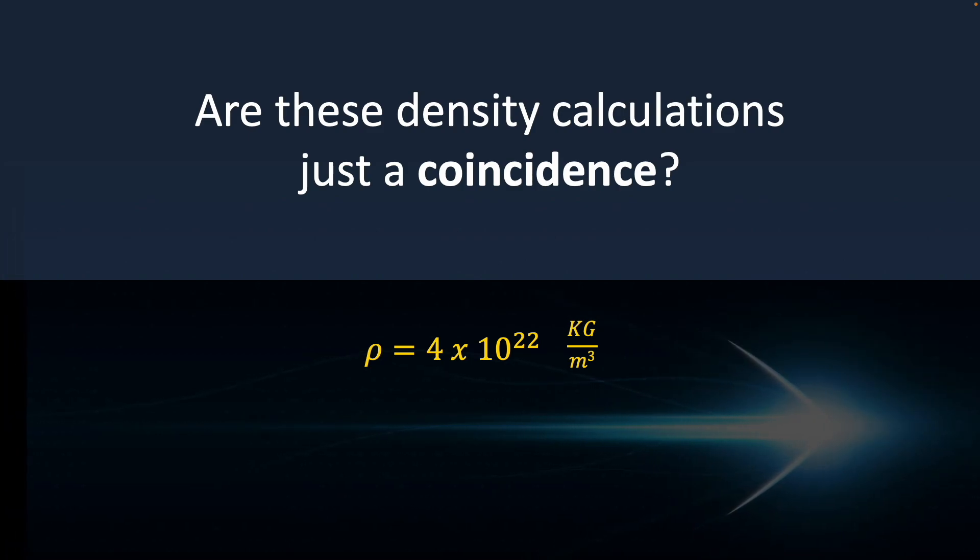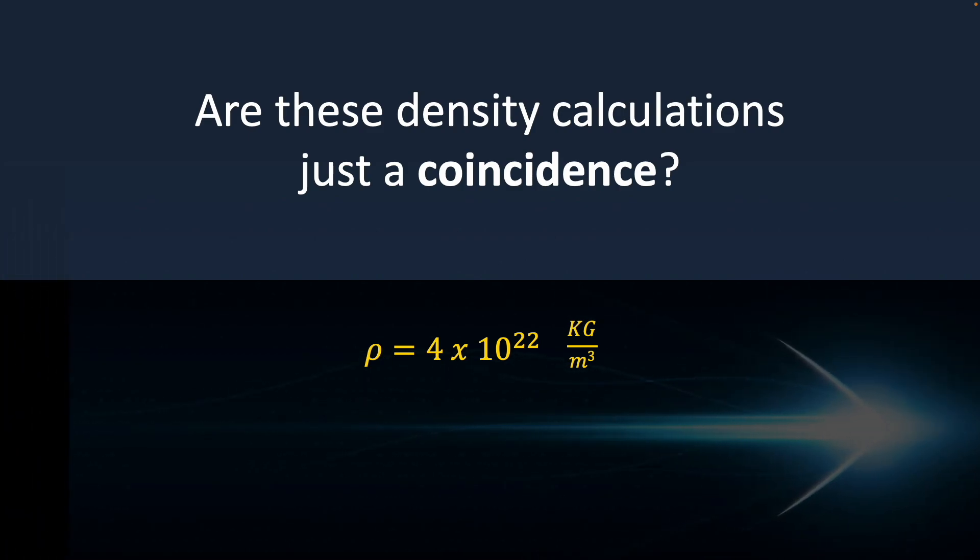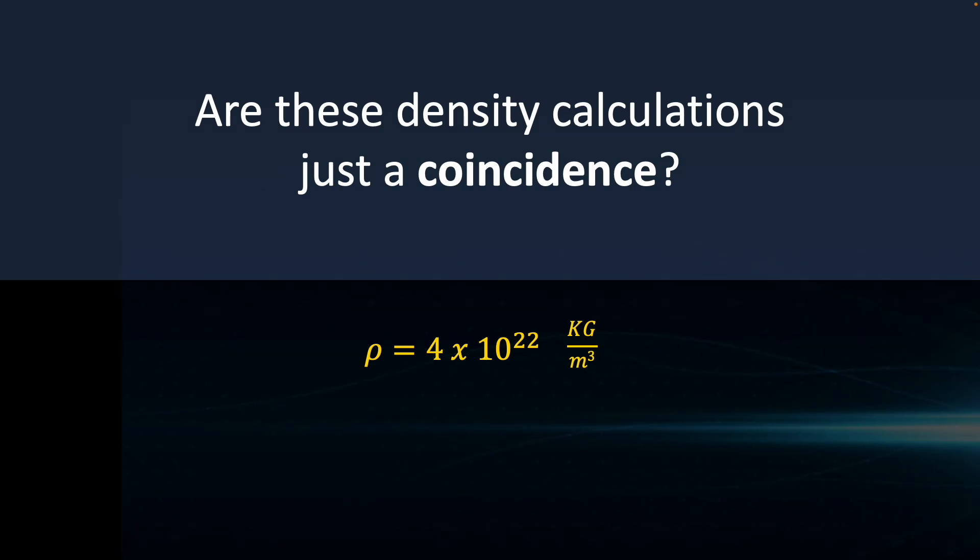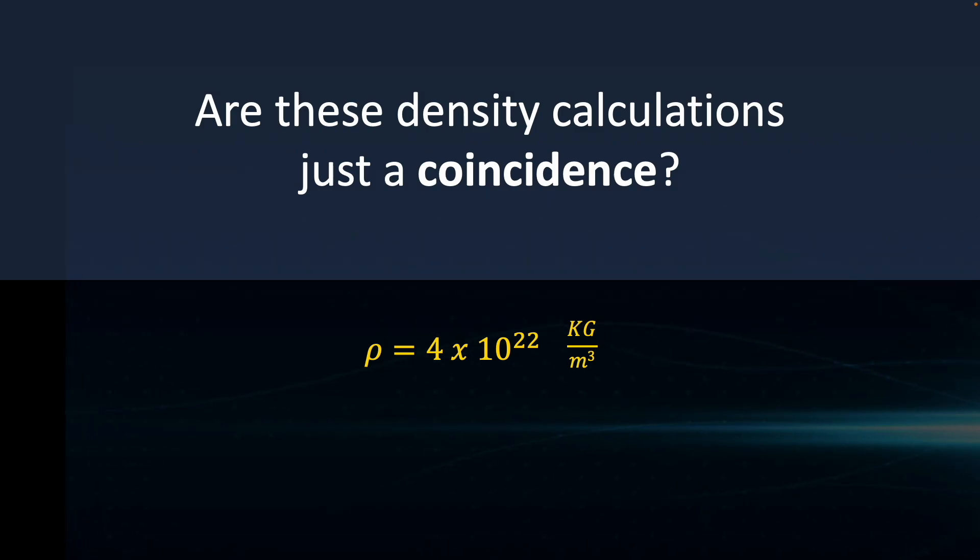Now in EWT, there is an ether mass calculation per volume. An ether density of 4 times 10 to the 22nd kilograms per meter cubed. Again, reminder of the use of the capital KG here. But either way, that's a very dense number. But is it right?